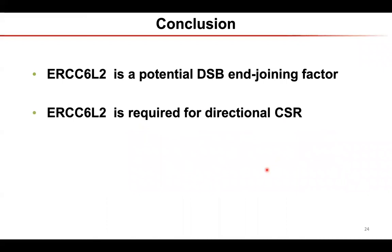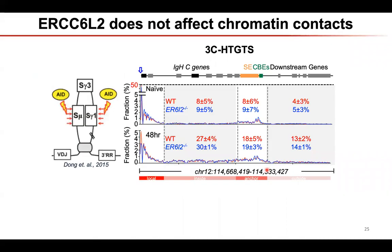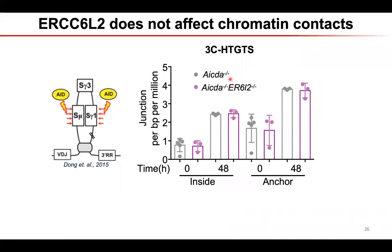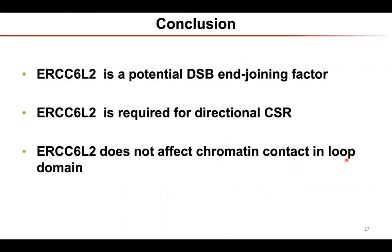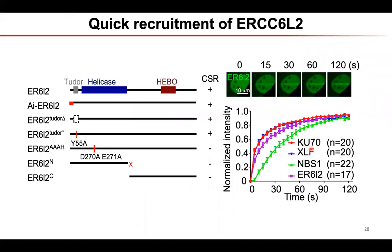We checked chromatin contacts using 3C-based technologies in wild-type and ERCC6L2 knockout cells. When looking at the antibody gene locus, there were no significant changes. We also did this in the AID knockout background and it still showed the same thing. So this gene does not affect cis chromatin contacts — instead its function is more in the DNA end-joining step.